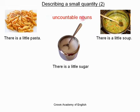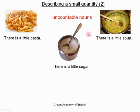Uncountable nouns — we cannot count them. They are not separate objects. Often they are a large mass of something, or they are often a liquid. And they exist only in the singular. That is very, very important. So when we have an uncountable noun, we must only use 'a little.'